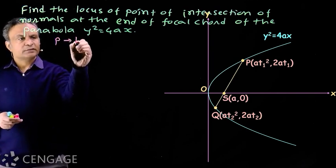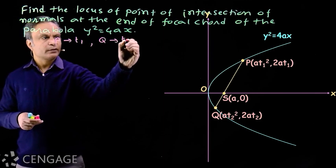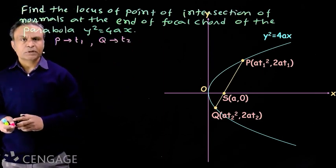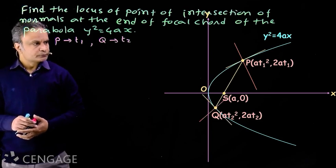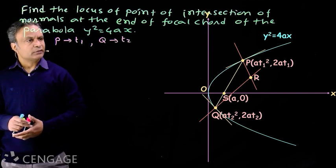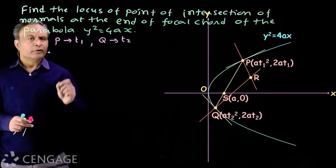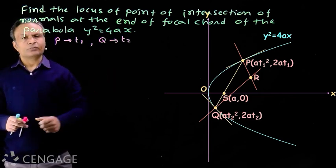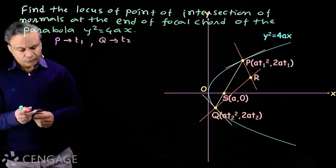Suppose the parameter of point P is t₁ and the parameter of point Q is t₂. Now we draw normals at points P and Q, which intersect at point R. Points P and Q are variable points, so point R will also be a variable point. We have to find the equation of the locus of point R.